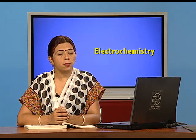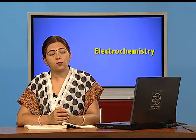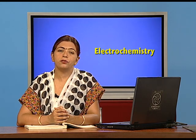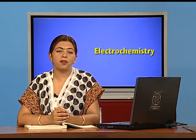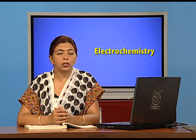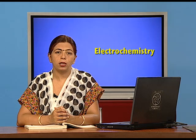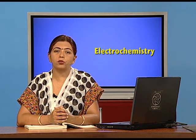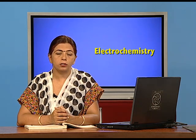Any iron article that comes in contact with air and moisture starts developing a brown coating — that is rust, which is chemically hydrated ferric oxide. Any point on the iron that first comes in contact with air and moisture starts acting as the anode. At the anode, loss of electrons (oxidation) takes place — the iron loses electrons and is oxidized to the ferrous state.